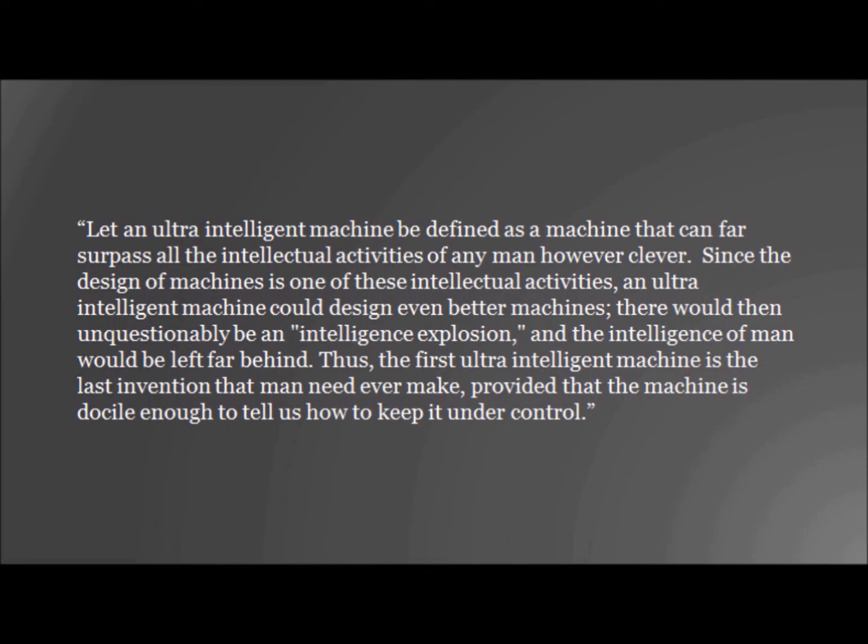In the words of I.J. Good, let an ultra intelligent machine be defined as a machine that can far surpass all the intellectual activities of any man however clever. Since the design of machines is one of these intellectual activities, an ultra intelligent machine could design even better machines. It would then unquestionably be an intelligence explosion and the intelligence of man would be left far behind. Thus, the first ultra intelligent machine is the last invention that man ever need make, provided that the machine is docile enough to tell us how to keep it under control.